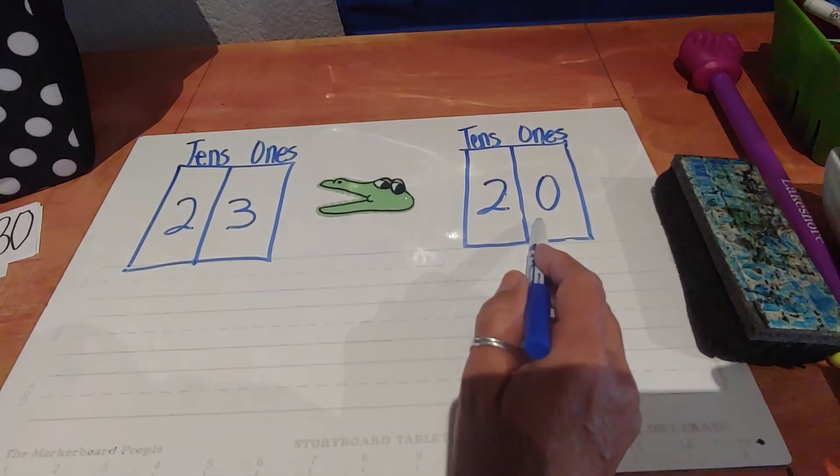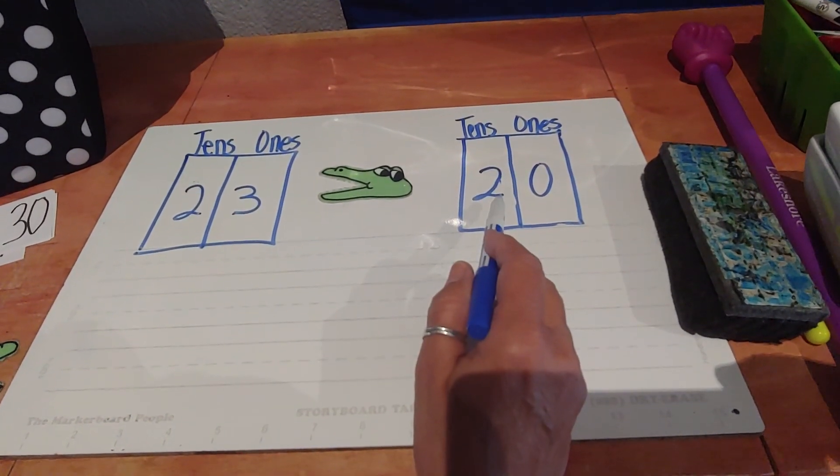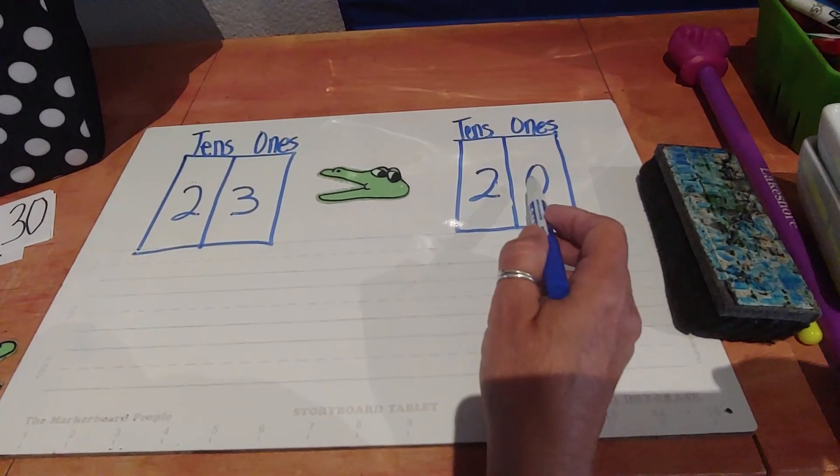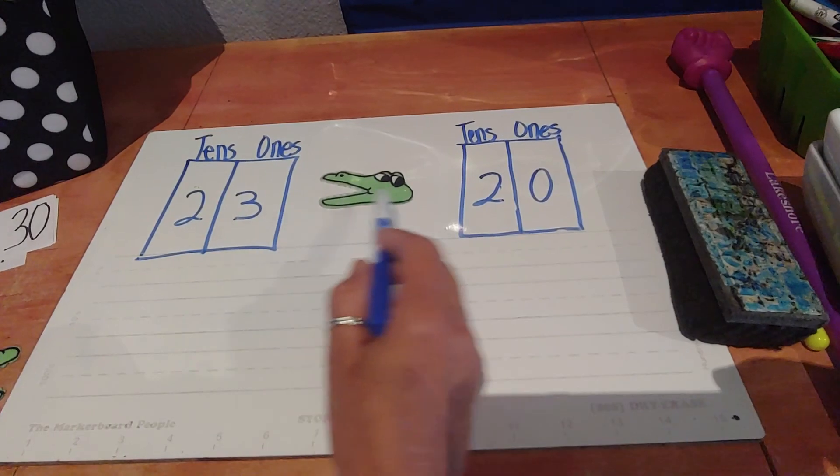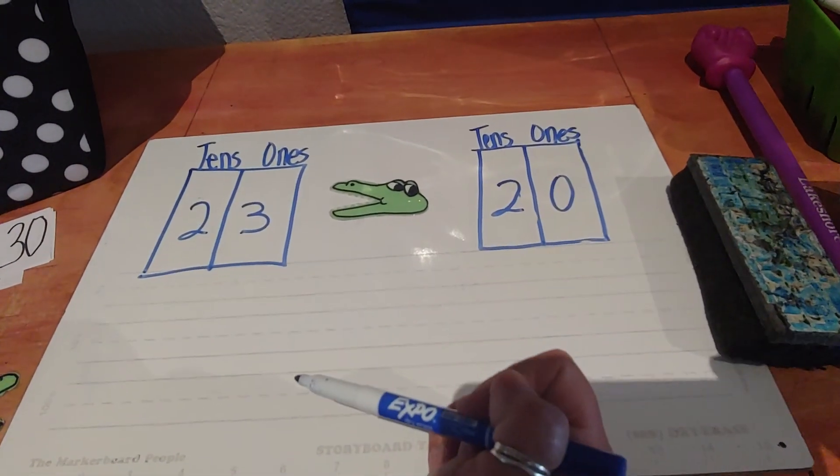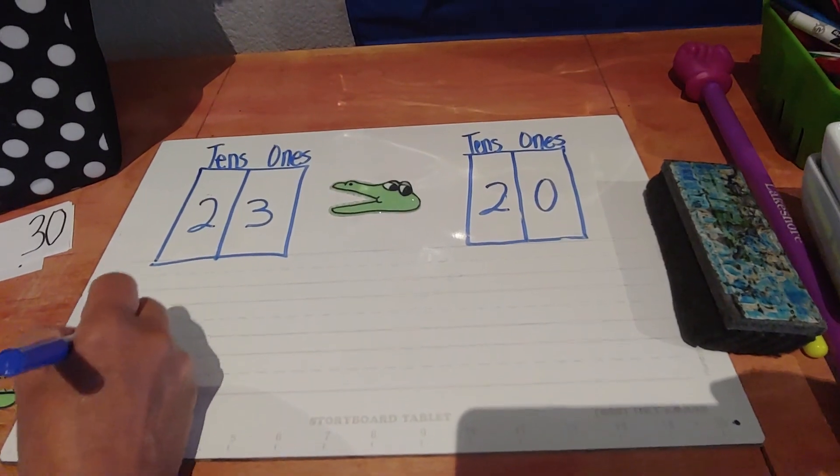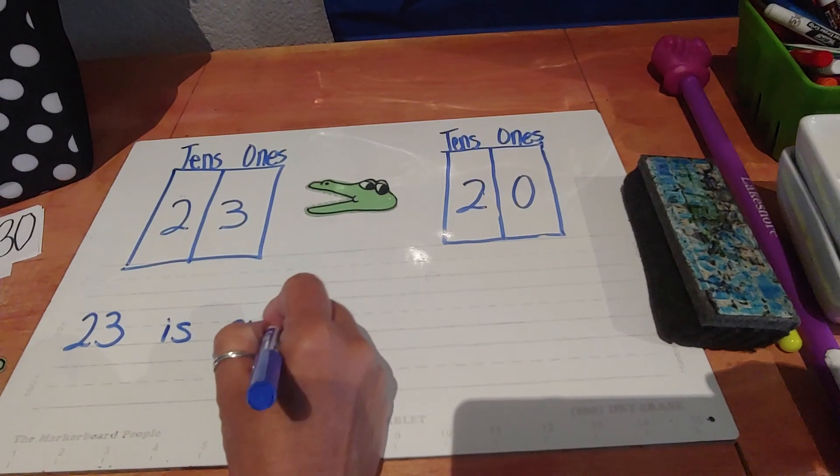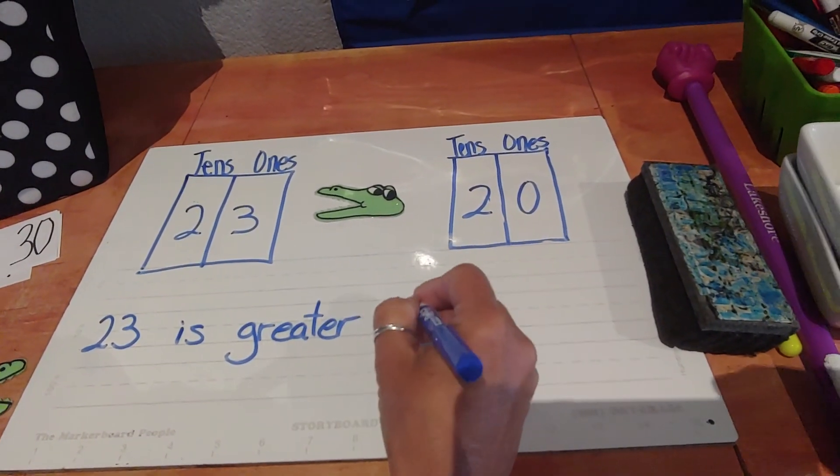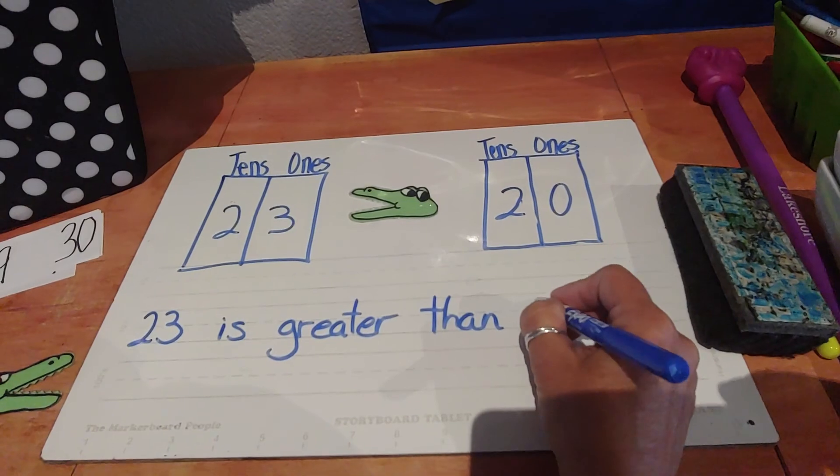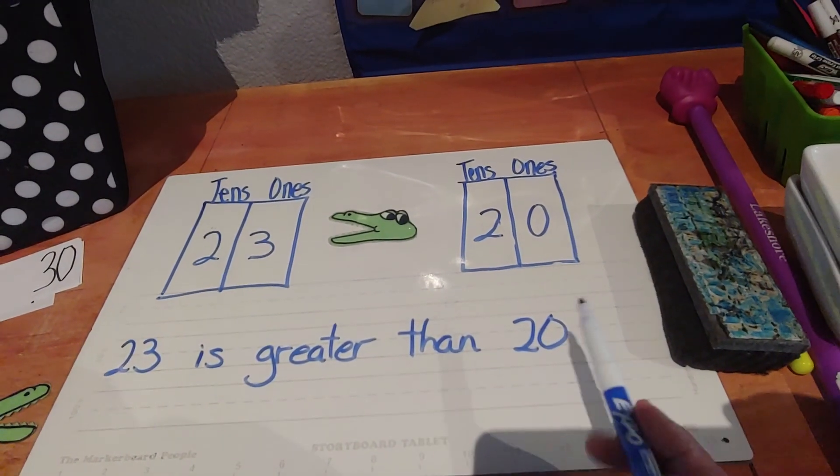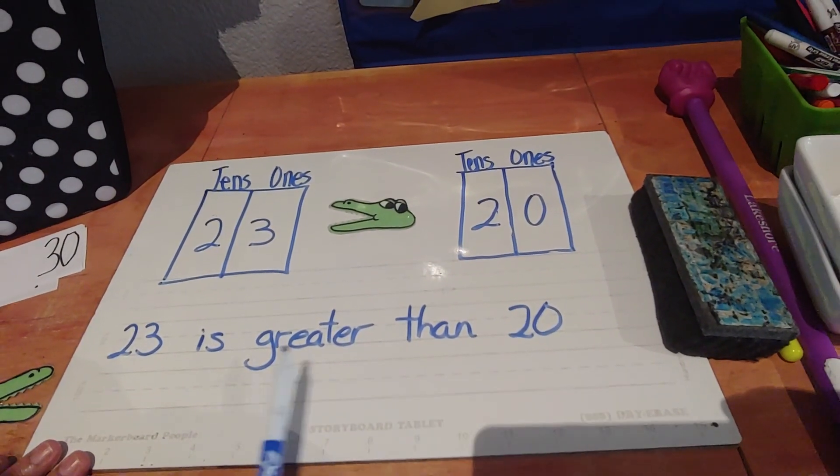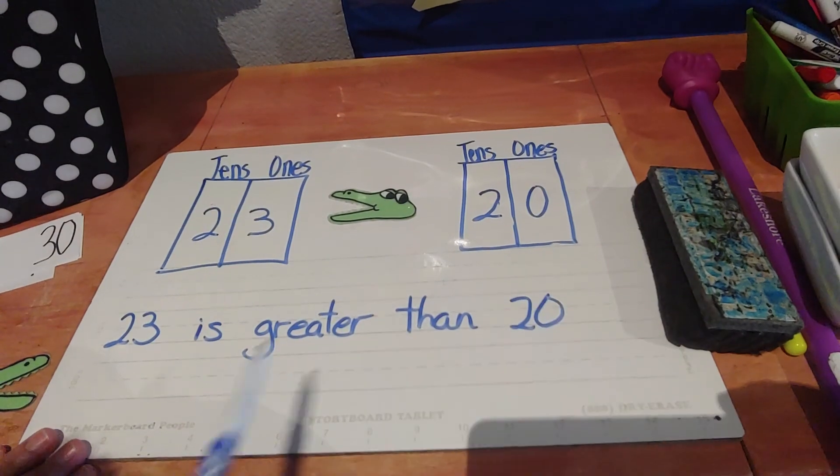We could use 21. We could use 22. But if we put 23, it wouldn't be true because then that would be an equal sign. So here our number sentence says 23 is greater than 20. So that's how you would fill in this answer. And then this is how you would write the number sentence because we start here and we read over that way.